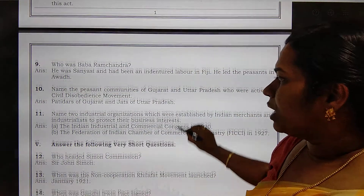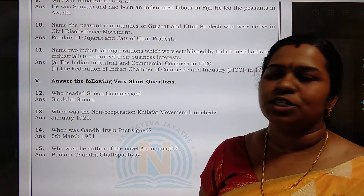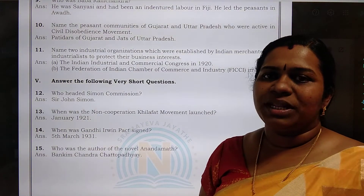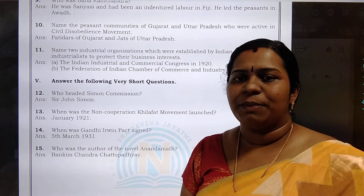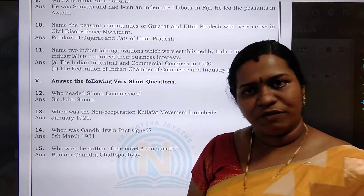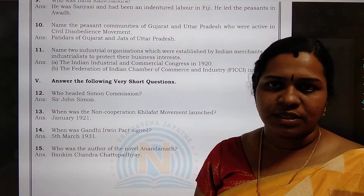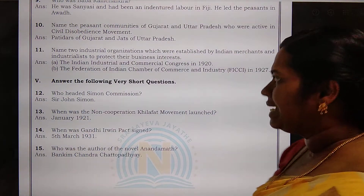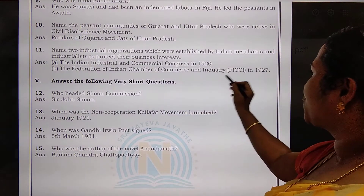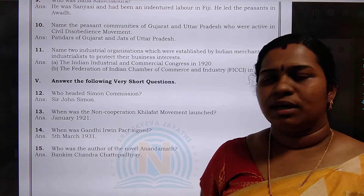Eleventh question: name two industrial organizations established by Indian industrialists to protect their business interests. They actively participated in the civil disobedience movement to protect their rights. The two organizations were: the IICC — Indian Industrial Chamber of Commerce — established in 1920, and FICCI — the Federation of Indian Chamber of Commerce and Industry — established in 1927.